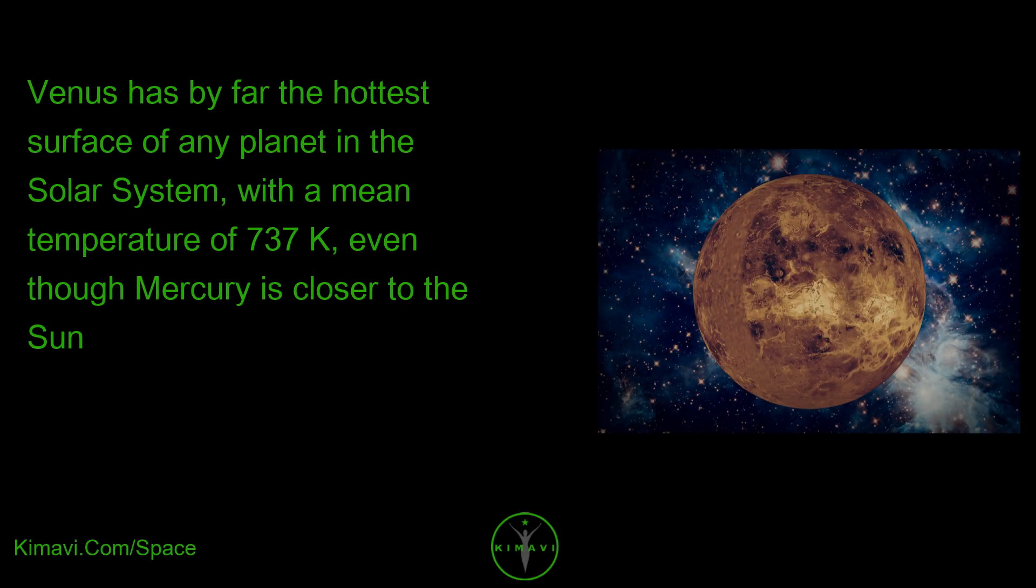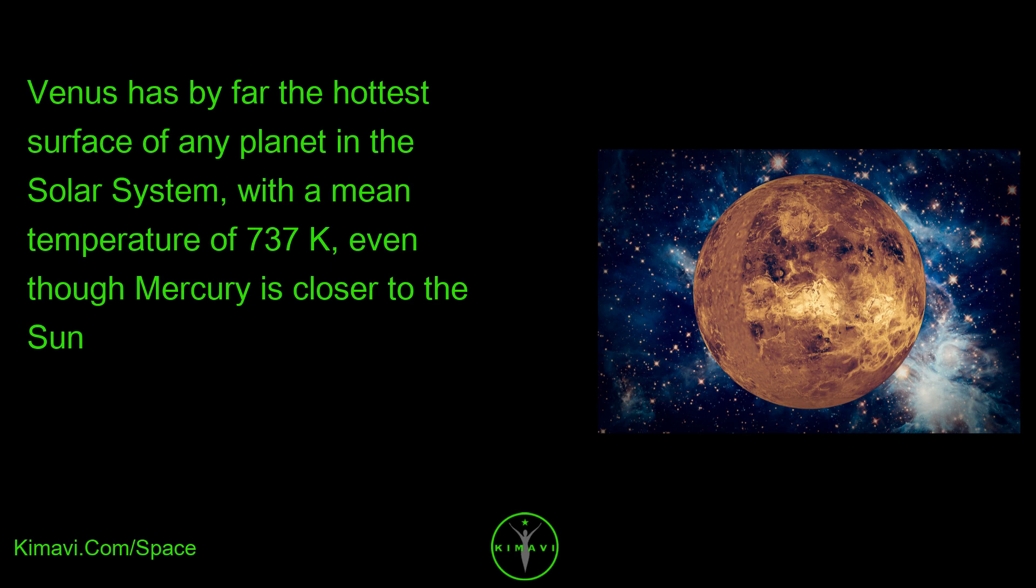Venus has by far the hottest surface of any planet in the solar system, with a mean temperature of 737 K, even though Mercury is closer to the Sun.